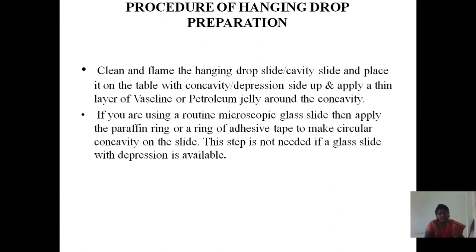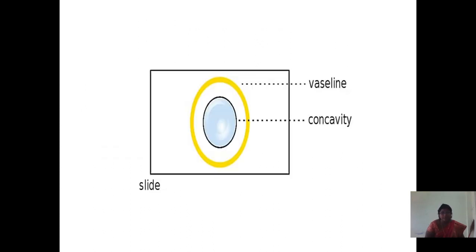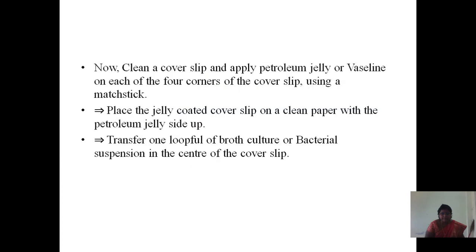Procedure for hanging drop preparation: clean and flame the hanging drop slide or cavity slide and place it on the table with the concavity or depression side up. Apply a thin layer of vaseline or petroleum jelly around the concavity. If you are using a routine microscope glass slide, apply a paraffin ring or a ring of adhesive tape to make a circular concavity on the slide. This step is not needed if a glass slide with depression is already available. Then clean the coverslip and apply petroleum jelly on each of the four corners using a matchstick. Place the jelly-coated coverslip onto clean paper with the petroleum jelly side up.